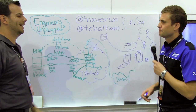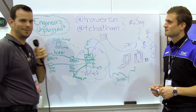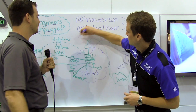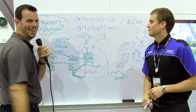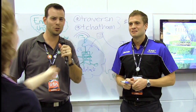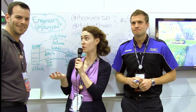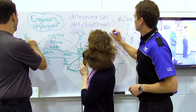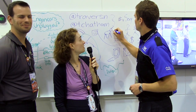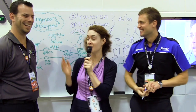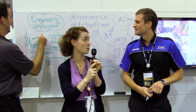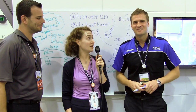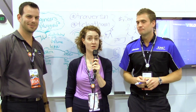So where are the rainbows, Tom? Rainbows are definitely there when the sun's shining on the day you don't have to go to work to bring up your DR plan. Let's draw a little rainbow in there. Well, thank you very much — and where are the unicorns? Who can draw a unicorn faster? Viewers, we're going to leave you to judge: Unicorn A, that's the Tom Chatham unicorn; Unicorn B from Travers Nicholas. Great stuff — thanks a lot, you guys, and we'll see you next time on Engineers Unplugged.